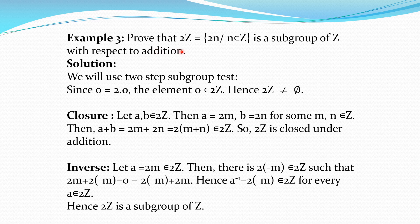Multiplying every element of Z by 2 gives: 0, 2, 4, 6, 8, ... and -2, -4, -6, ... So it is an infinite subset and we do not apply the finite subgroup test. We use either the one-step or two-step subgroup test. We will use the two-step subgroup test. Clearly 2Z is a non-empty subset of Z, as it contains 2×0 = 0.